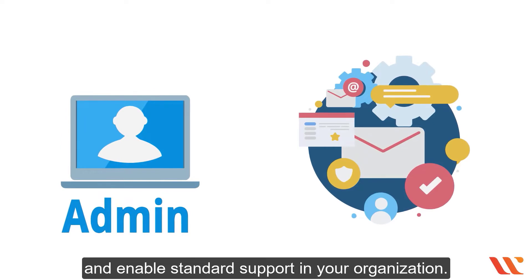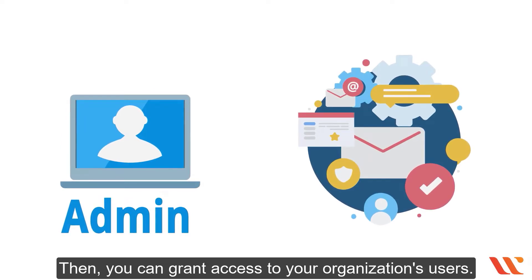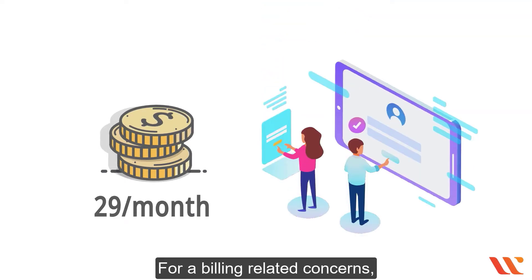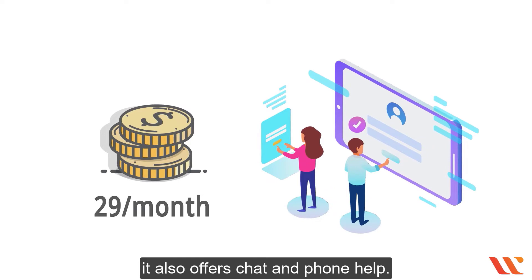The priority case for standard support will be priority P2. You must have an organization admin role to investigate the support plan and enable standard support in your organization, then grant access to your organization's users. The standard support package costs $29 per month for billing-related concerns and also offers chat and phone help.